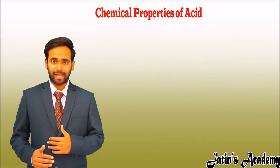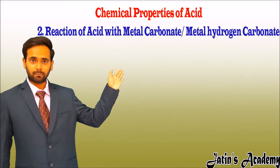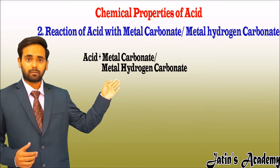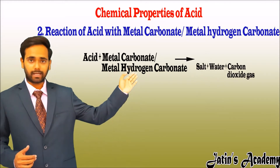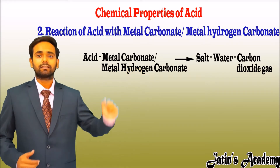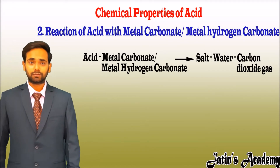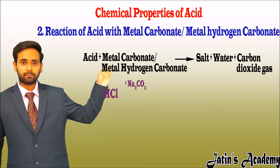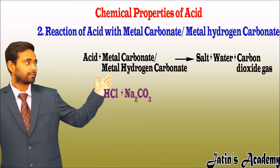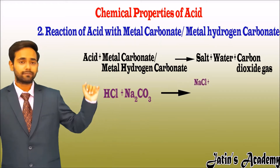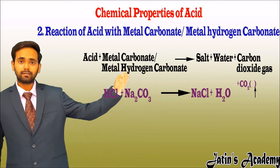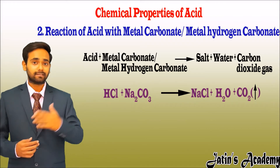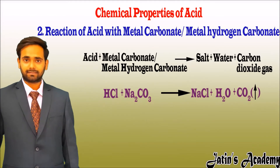The second chemical reaction of acid is when acid reacts with metal carbonate or metal hydrogen carbonate. It gives metallic salt, water, and carbon dioxide gas. For example, when HCl (hydrochloric acid) reacts with Na₂CO₃ (sodium carbonate), it gives NaCl (salt), water, and carbon dioxide gas. The upward arrow on CO₂ means the gas is being released into the atmosphere.